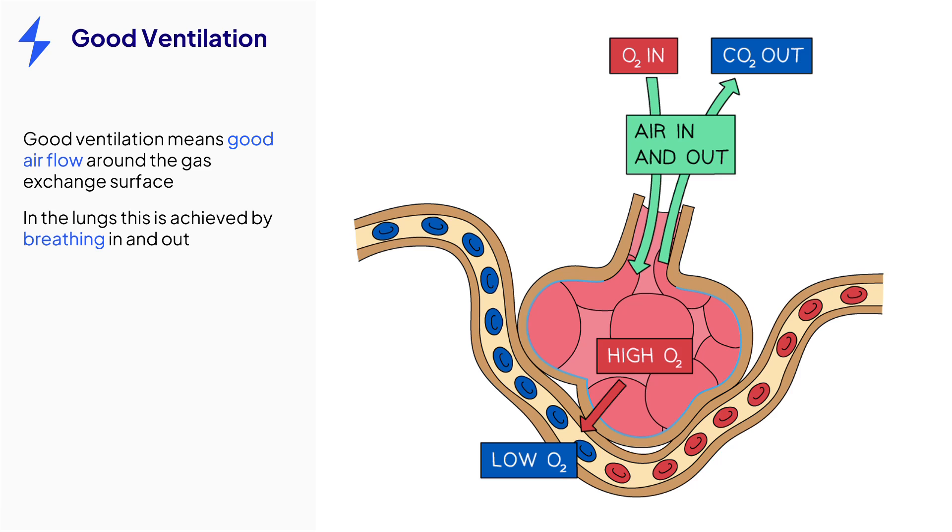When we breathe out, we remove the carbon dioxide from the alveoli, meaning that it is always low inside the alveoli, so more can be diffused from the blood where it is at a high concentration.